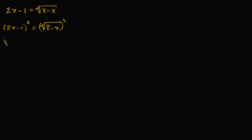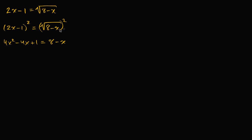2x minus one squared is 4x squared minus 4x plus one, is equal to eight minus x. Now we have to be very, very careful here. We might feel like we did legitimate operations — we did the same thing to both sides — but these aren't quite equivalent equations, because when you square something, you're losing information.